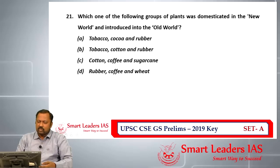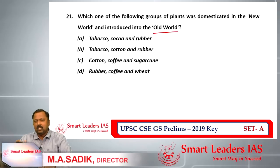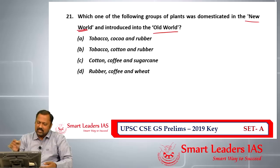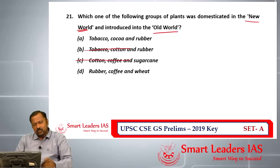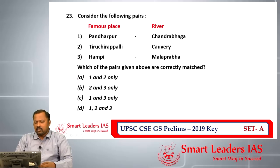Question number twenty-one asks which group of plants was domesticated in the New World and introduced to the Old World. The Old World refers to Europe and Asia; the New World refers to America, west of the Atlantic. Cotton and wheat are indigenous crops of Asia, so any option containing cotton or wheat is eliminated. Options B and C are eliminated, leaving only option A as the answer for question number twenty-one.